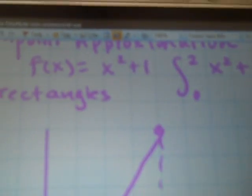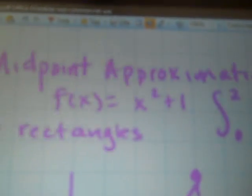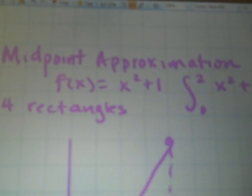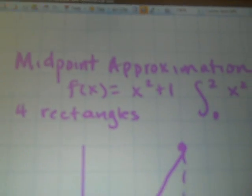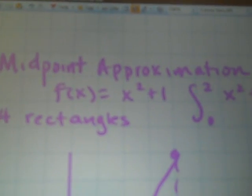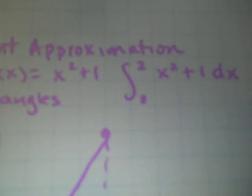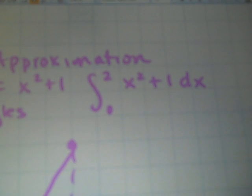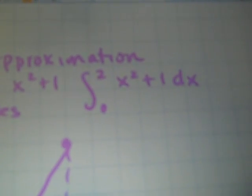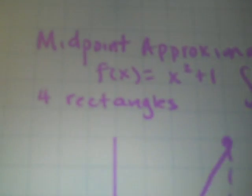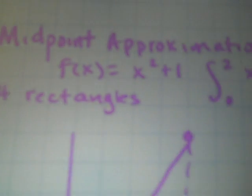This is the solution to our midpoint Riemann sum, and we're going to use the function x squared plus 1. That's what the integral looks like — it's on the interval from 0 to 2 of x squared plus 1 dx, and we're going to use 4 rectangles.